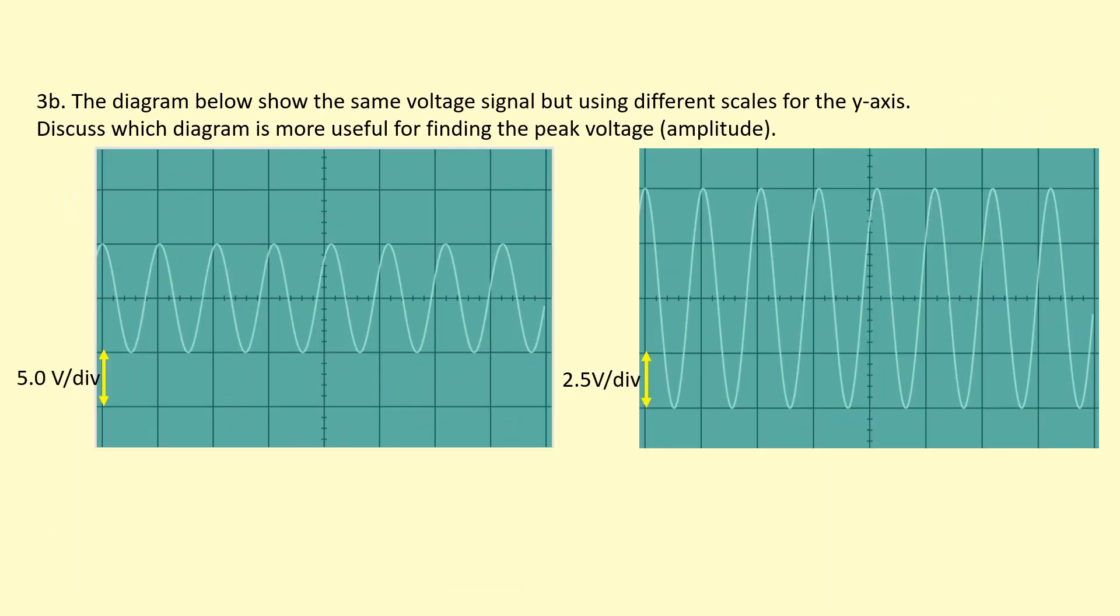In this example here, we've got the same voltage signal with different scales on the y-axis. Discuss which diagram is more useful for finding the peak voltage, in other words, the amplitude.